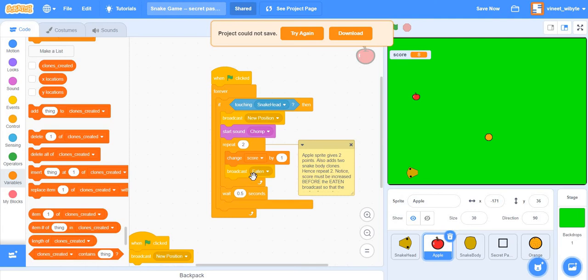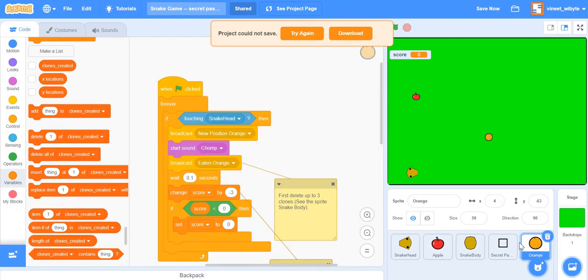Now, if you wanted to add more tails to every apple eaten, you could say repeat three, repeat four, whatever you want. So this part is really not that hard. The trickier bit comes with this orange.